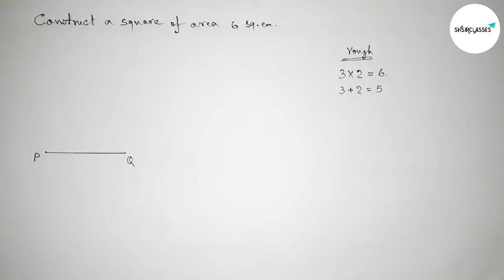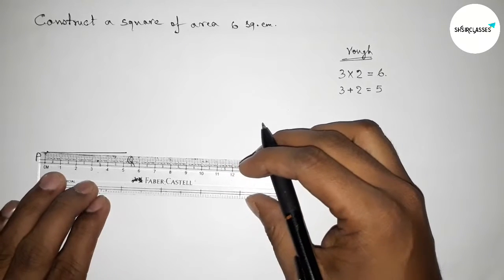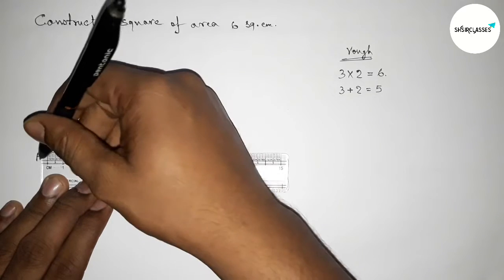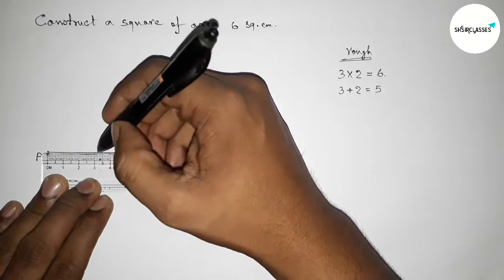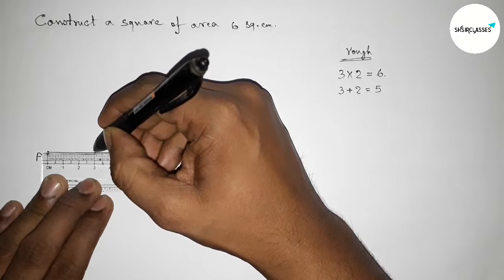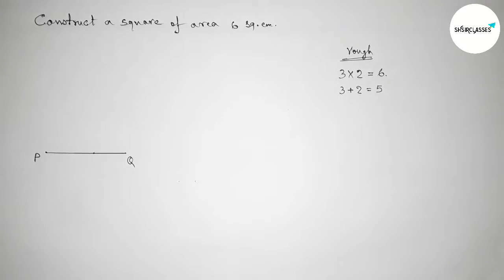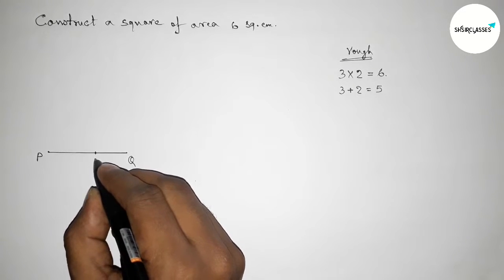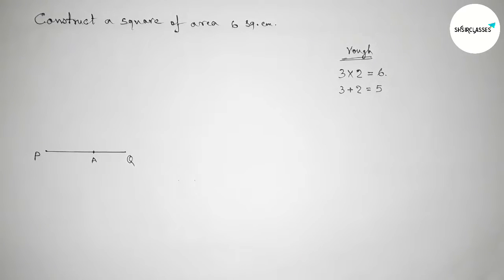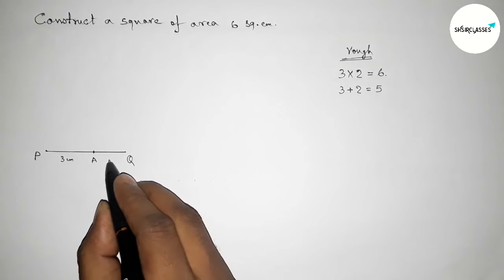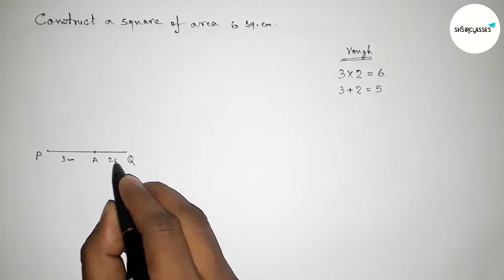Next we have to divide the line PQ in the ratio 3:2. Taking 3 centimeters first — this is 3 centimeters — and the remaining part is obviously 2 centimeters. Marking this point as A, so PA equals 3 centimeters and AQ equals 2 centimeters.